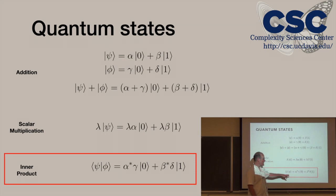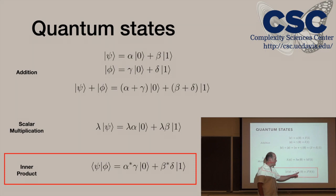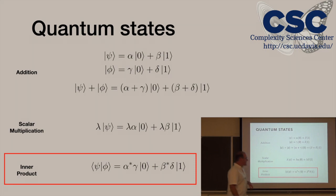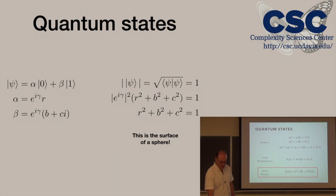The inner product has a little twist to it — instead of just the standard inner product in a real space, where we'd have the product of the zero coefficients and the product of the one coefficients, we put a star or complex conjugate on the first of the pair. This ensures that the inner product with yourself — the norm of anything — remains real.